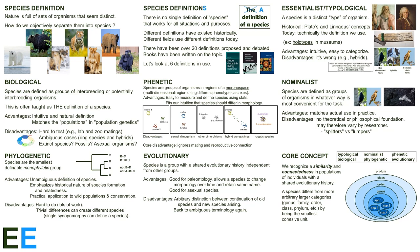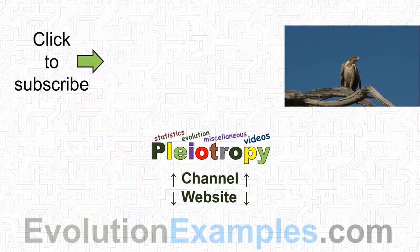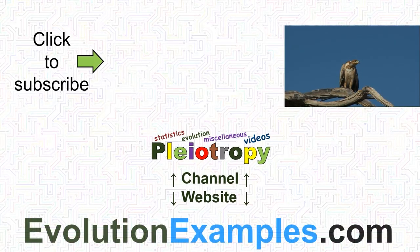Defining species is not a trivial matter. Like nature, it's complicated. But this complexity is a big part of what makes biology and biodiversity so endlessly fascinating. A high-resolution PDF of this screen is available on the Evolution Examples website, along with links to other videos we've made about evolutionary biology. Share this video if you think it's interesting, and subscribe to see more!